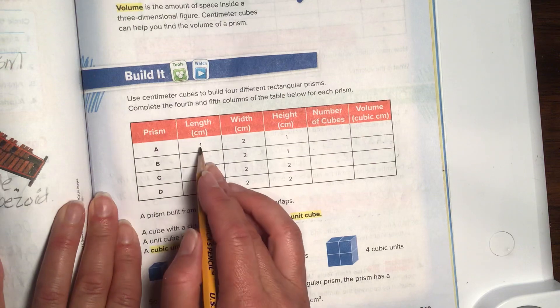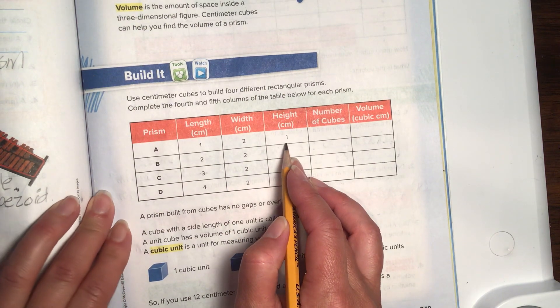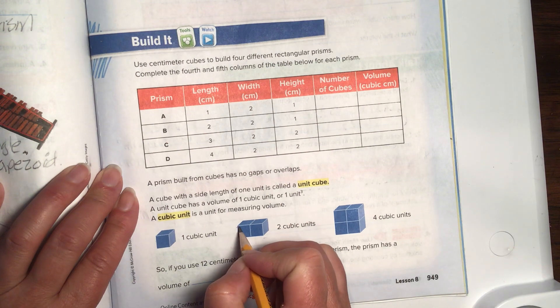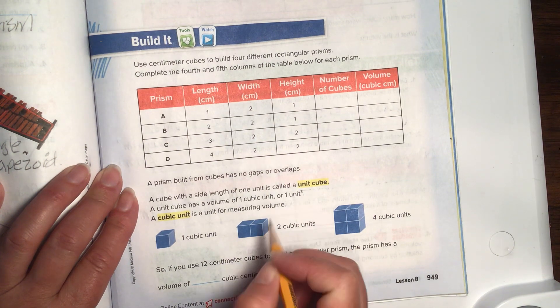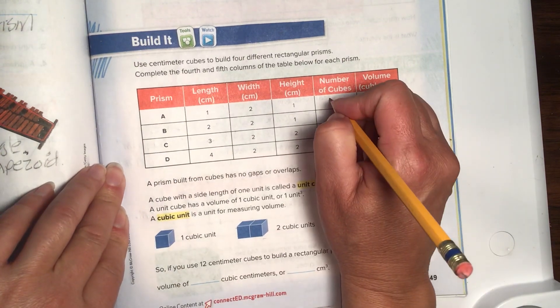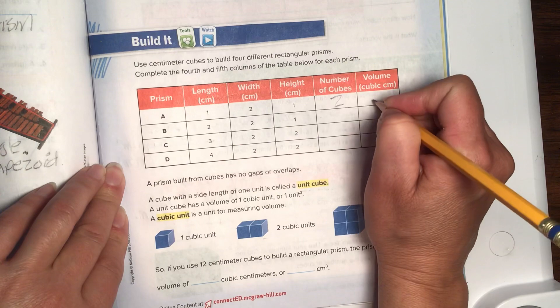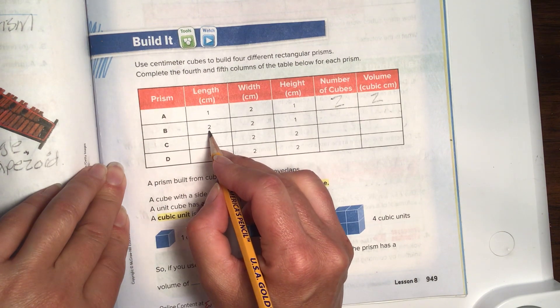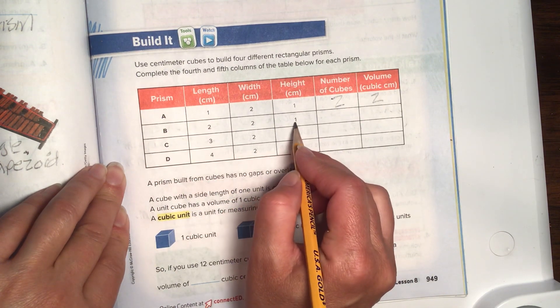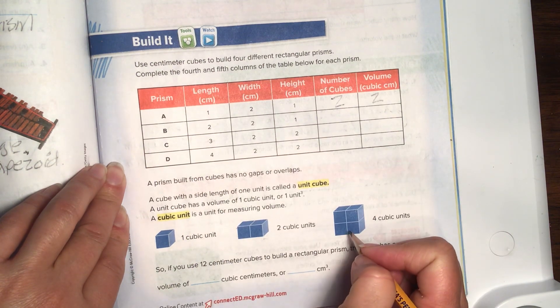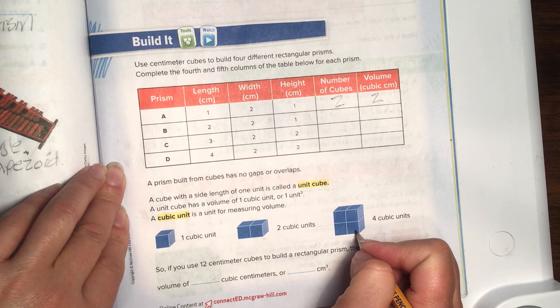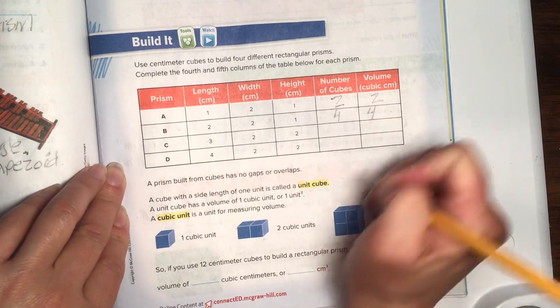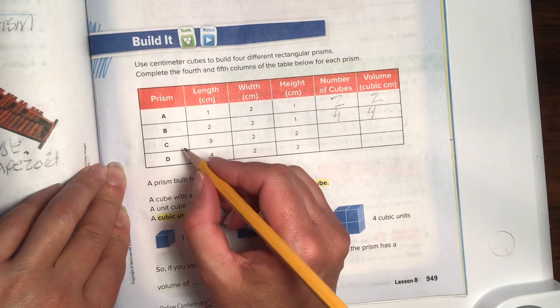So, prism A. We have 1 times 2 times 1. That's saying we have 1 that's 2 high, so we have 1 that's 1 high, 2 across, and 1 deep. So, this right here really looks very similar to this. We can say there are 2 cubes, and the cubic centimeter is 2 cubic centimeters. Now let's visualize this one. This one has 2 cubes by 2 cubes by 1 cube. So, we are going to look like this one. 2 cubes by 2 cubes, and then it's 1 cube deep. So, then we are going to have a visualization of 4.